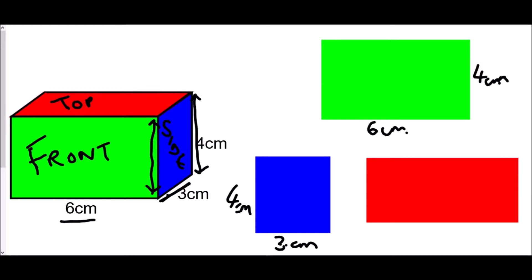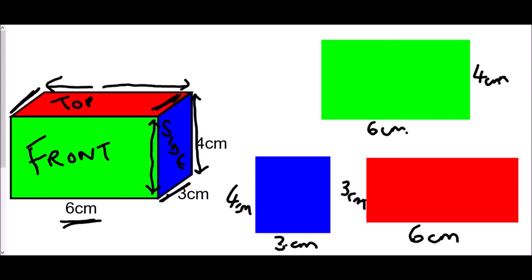For the top, none of the dimensions are marked directly — they come from other parts of the diagram. The length corresponds to the 6 cm at the bottom of the green rectangle. The other dimension looks diagonal due to the 3D perspective, but it's the same as the bottom of the side piece, which is 3 cm.